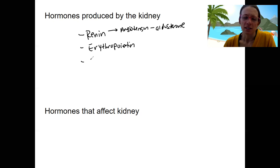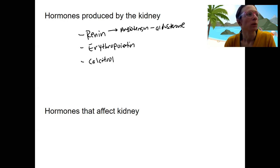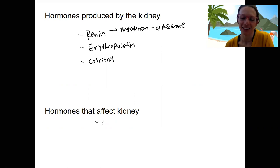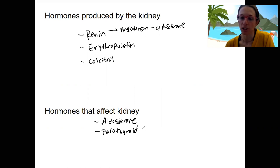Another one produced by the kidney is calcitriol. This is stimulated by low calcium and relates to calcium homeostasis. Hormones that affect the kidney include aldosterone, and parathyroid hormone, which increases calcium channels in the membranes to increase calcium reabsorption in response to low calcium.